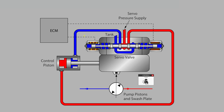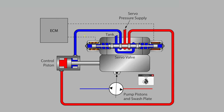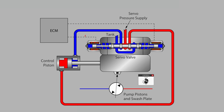When the control lever is pushed further forward for a faster forward propel speed, the current to the solenoid is increased further. The valve spool opens once again, allowing additional servo fluid to enter the control piston and extend it further, increasing the swashplate angle.